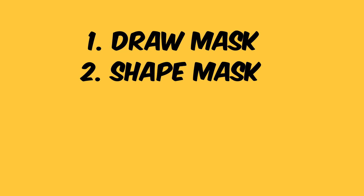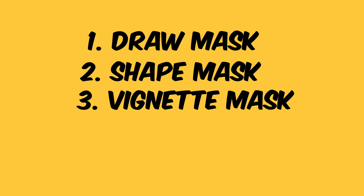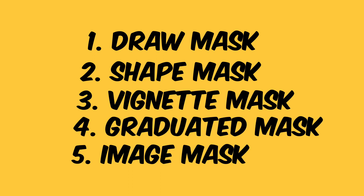Final Cut Pro has five masking tools that can be found under the effects section. We have the Draw Mask, the Shape Mask, Vignette Mask, Graduated Mask, and then the Image Mask.